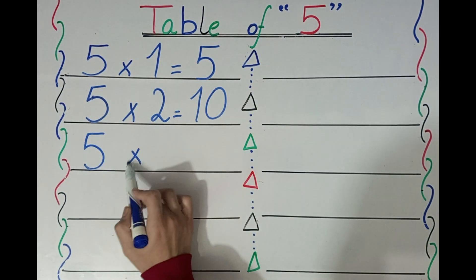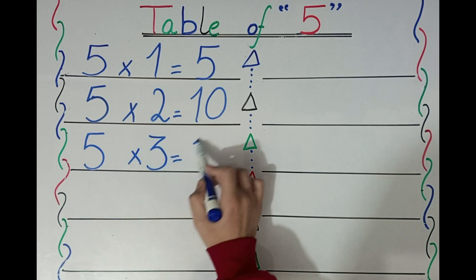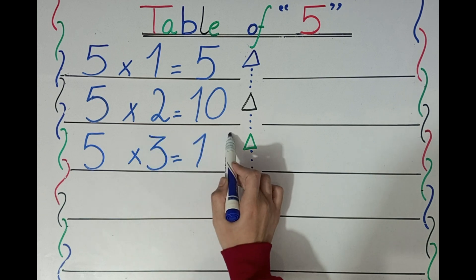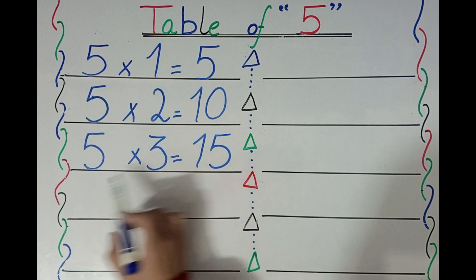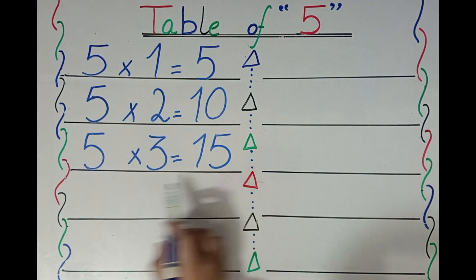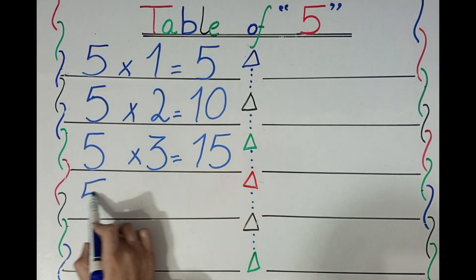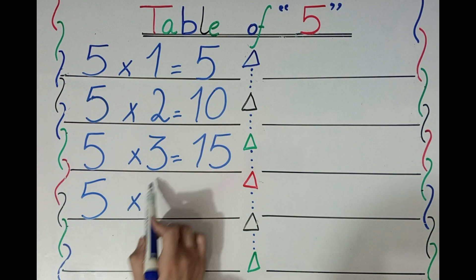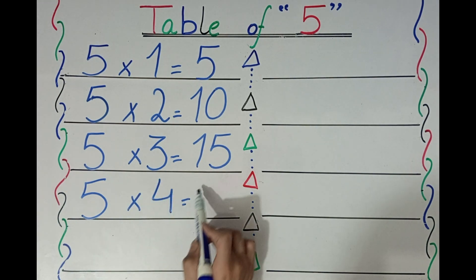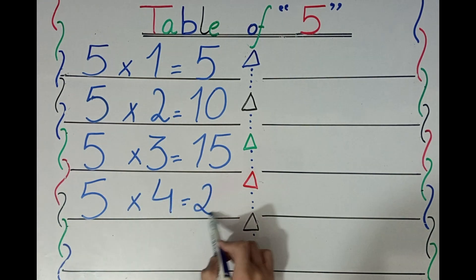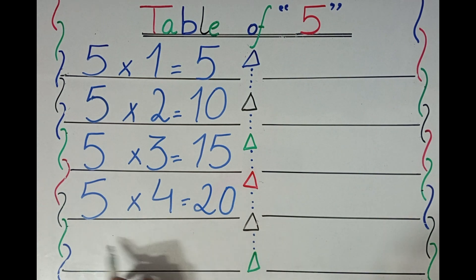Five threes are fifteen. Five threes are fifteen. Five fours are twenty. Five fours are twenty.